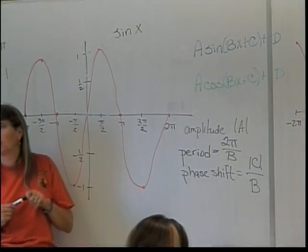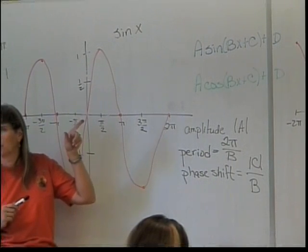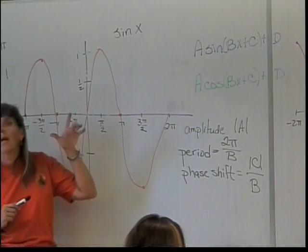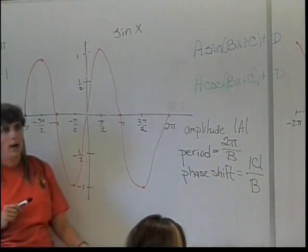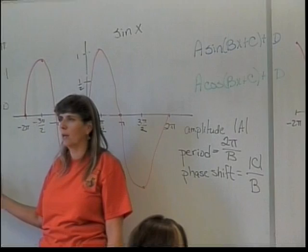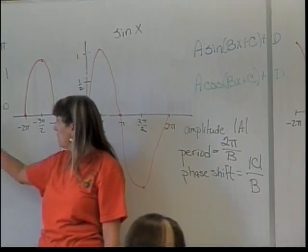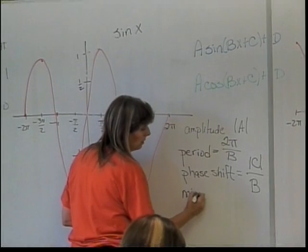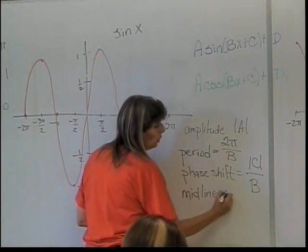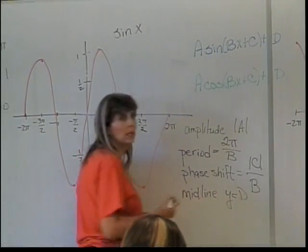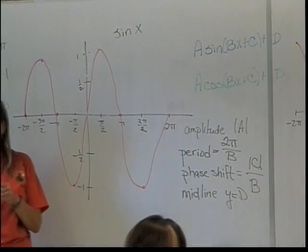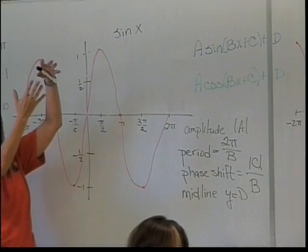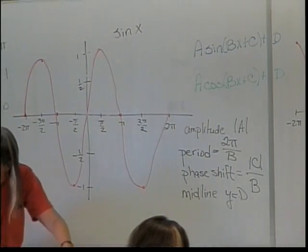Last but not least, what about that D? What will that do to my graph? It moves everything up or down. So what will that change? The midline is going to move. My midline will be Y equals D, whether D is positive or negative, because that's where it's going to move the midline. If D is positive, it's going to move the midline up. If it's minus D — D is negative — it's going to move the midline down.